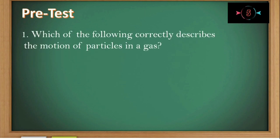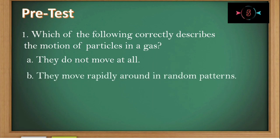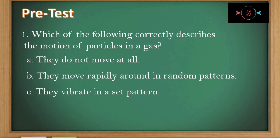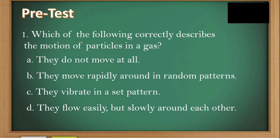Number one: Which of the following correctly describes the motion of particles in gas? Letter A, they do not move at all. Letter B, they move rapidly around in random patterns. Letter C, they vibrate in a set pattern. Letter D, they flow easily but slowly around each other. The correct answer is letter D.